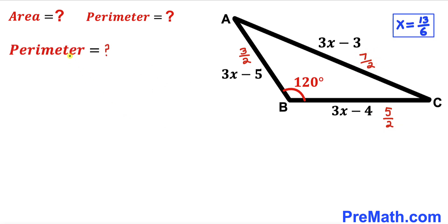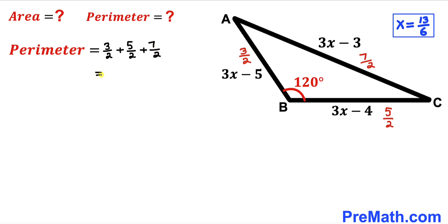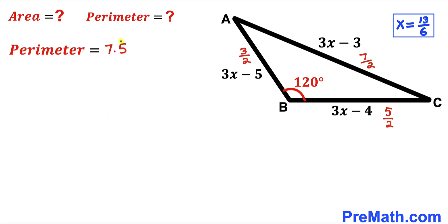Now we calculate the perimeter of triangle ABC. The perimeter is the sum of all side lengths: 3/2 plus 5/2 plus 7/2. With a common denominator of 2, adding 3 plus 5 plus 7 gives 15, so the perimeter equals 15/2, which is 7.5 units.